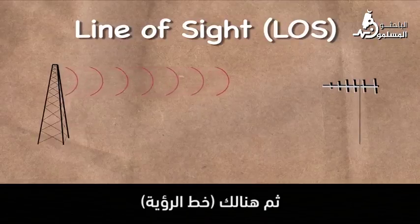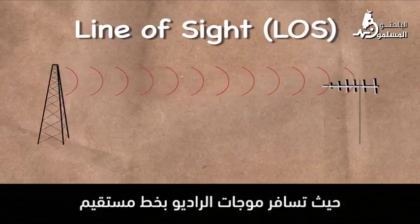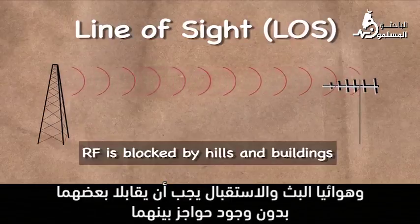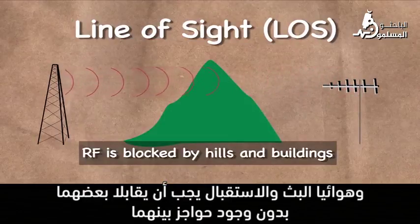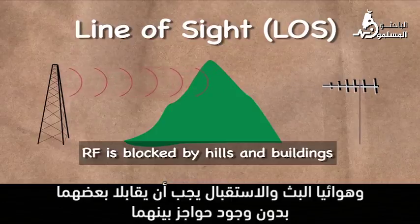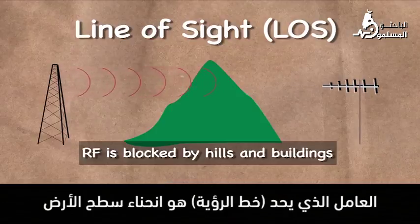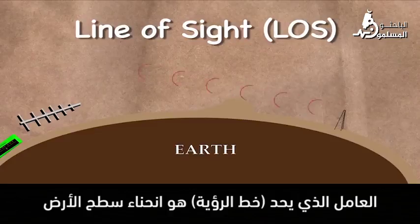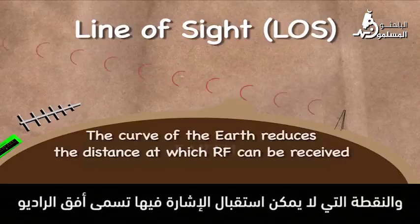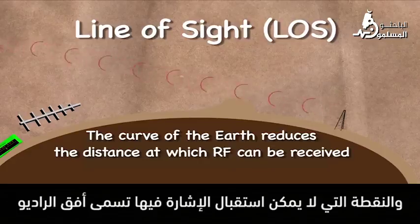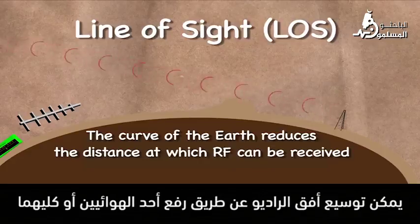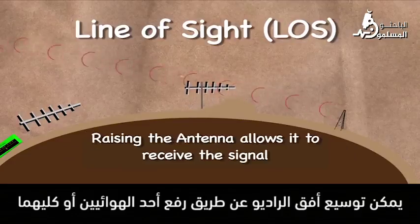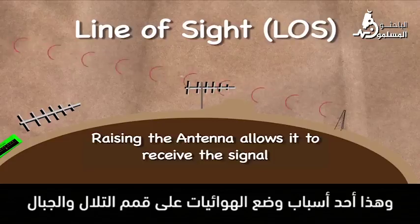Then there's line of sight, where the RF waves travel in a straight line, and the transmitting and receiving antennas must be able to see each other with no obstacles in the way. The limiting factor for line of sight is the curvature of the earth's surface. The point at which the signal can no longer be received is called the radio horizon. The radio horizon can be extended somewhat by elevating either or both antennas. This is one reason antennas are positioned on top of hills and mountains.